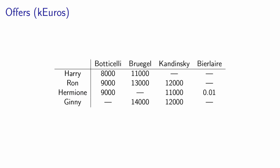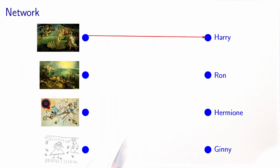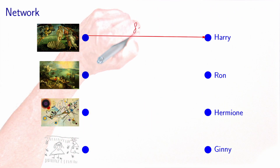In this case, the masterpieces are the resources and the four children are the tasks. So we need to assign the resources to the tasks. In order to obtain a network representation, we will define a node for each masterpiece (each resource) and a node for each of the children (each task). We will include an arc for each offer that has been made. For example, there was an offer for the Botticelli from Harry.